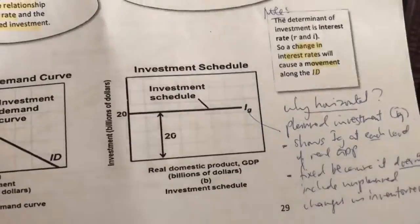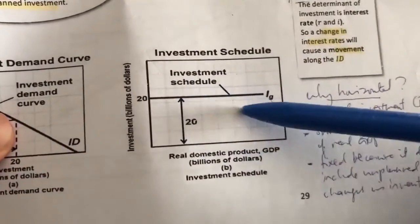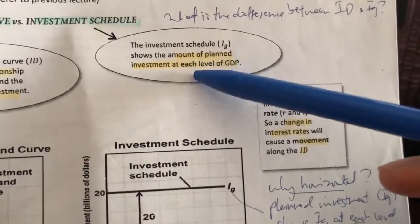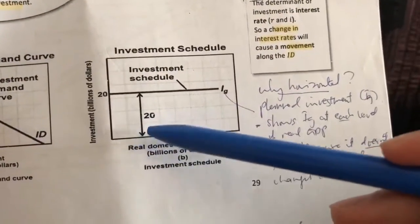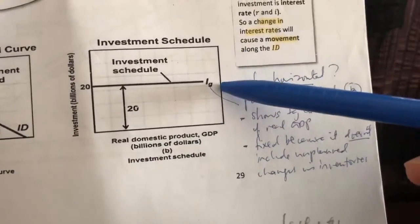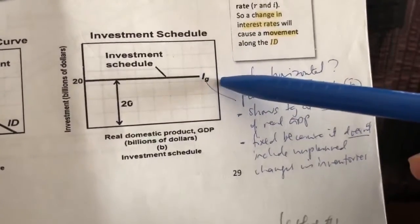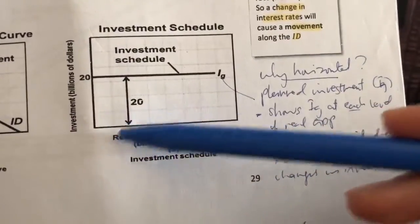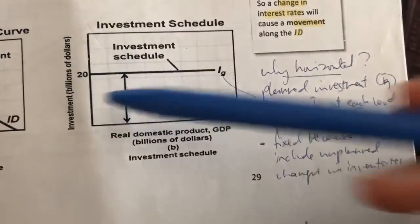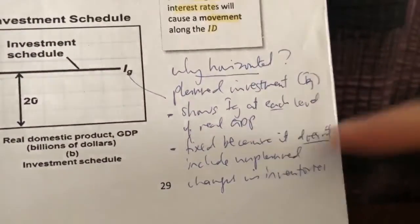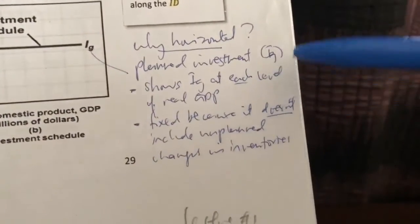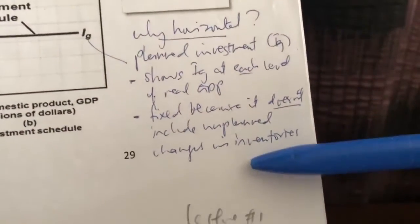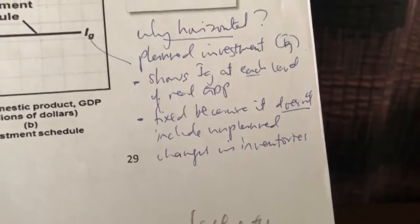The investment schedule, on the other hand, is not downward sloping — it's a straight horizontal line. It shows the amount of planned investment at each level of GDP. Regardless of what the GDP level is, you'll have the same amount of planned investment. So IG — gross investment, also known as planned investment — is fixed. For example, at each GDP level, the amount of planned investment is 20 billion. It is horizontal because it does not include any unplanned changes in inventories.